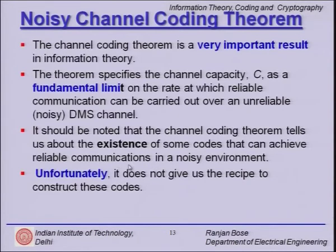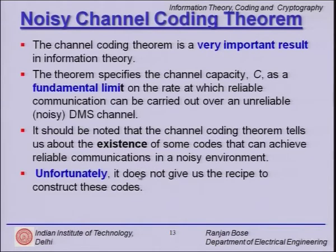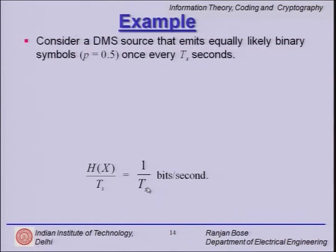This is a very important result — it puts a fundamental limit on the rate at which reliable communication is possible over an unreliable channel. The sad part is it tells us about the existence of these codes but does not give us a recipe to construct them. That is why the inventors of good codes — Hamming code, Reed-Solomon code, Reed-Muller code, and others — got their names attached, because there is no hard and fast rule to construct them. It relies on the ingenuity of the inventor.